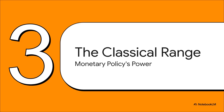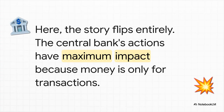Time to flip the script completely. We're leaving the liquidity trap behind and jumping to the other extreme — the classical range. On our graph, this is the vertical part of the LM curve. And a vertical line means something really specific: the demand for money doesn't care at all about the interest rate. So in this world, nobody is hoarding cash. You only hold what you need to buy your groceries and pay your rent. This totally changes the game. Fiscal policy suddenly becomes pretty much useless, but the central bank becomes all powerful.